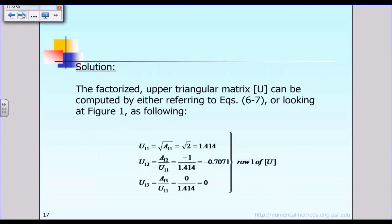The first step is phase one: we have to find the factorized upper triangular matrix U. We have to do it in a row-by-row fashion, which means we figure out all the unknowns of matrix U in row one first. That involves the unknowns U11, U12, and U13.